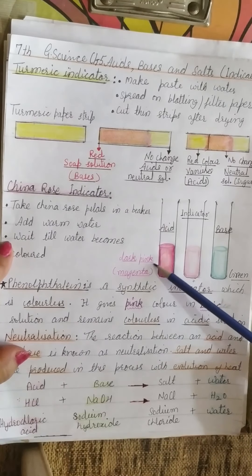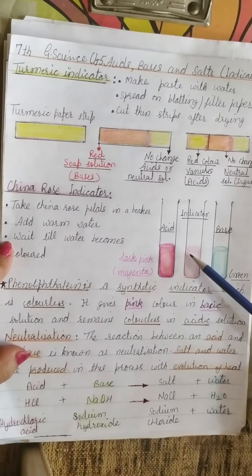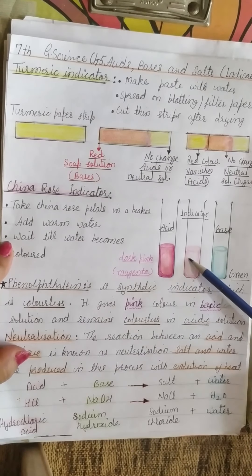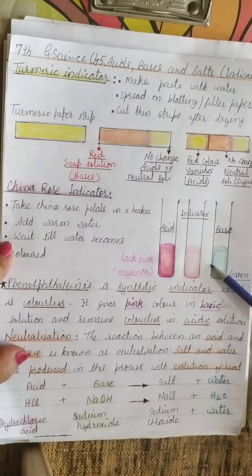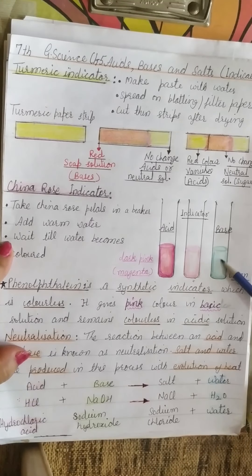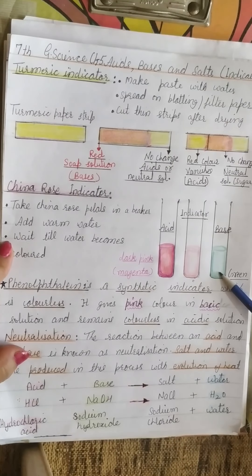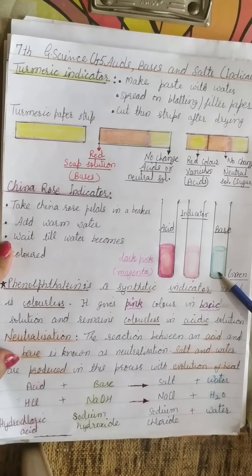If any solution shows dark pink color with the china rose indicator, that means it is an acid. And if any solution turns green on putting the china rose indicator, that means the solution is a base or basic in nature.